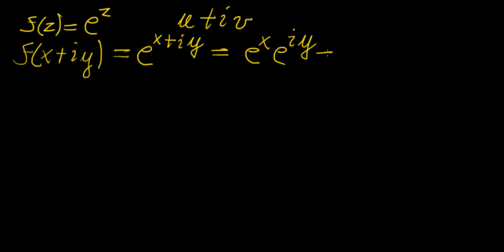And this is going to be the Euler identity, which decomposes into cosine of y plus i sine of y.